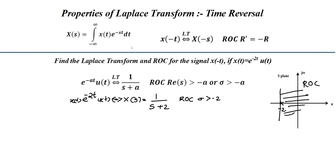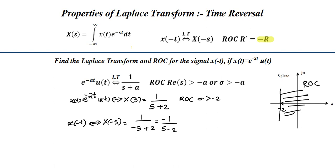Now we need to find the Laplace transform of X(-t). By the time reversal property, the Laplace transform of X(-t) is X(-s). So we replace s with -s in 1/(s+2), giving 1/(-s+2), which rearranges to -1/(s-2). For the ROC, we multiply sigma by minus, so sigma greater than -2 becomes sigma less than 2.